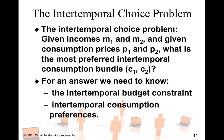Welcome to week 3's second lecture. We are looking at the intertemporal choice problem. You have incomes for the two periods M1 and M2, and consumption prices P1 and P2. You can think of these prices as the cost of a bundle of commodities. We need to figure out the most preferred intertemporal consumption bundle, which is an allocation of consumption for the current period versus the second period. To do that, we need preferences and the intertemporal budget constraint.